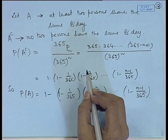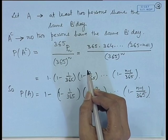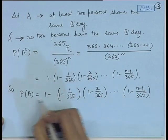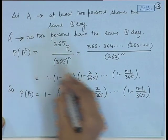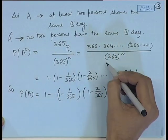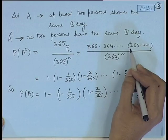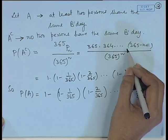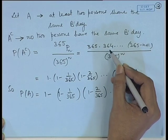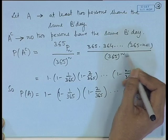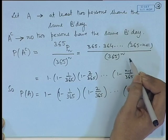Here you can see that the elementary rules of probability have been used for calculation — specifically, we used the complementary probability rule and the method of classical probability by assuming all birth dates to be equally likely for all persons.